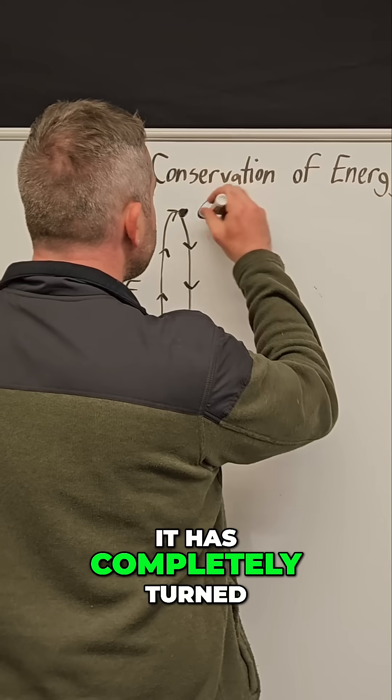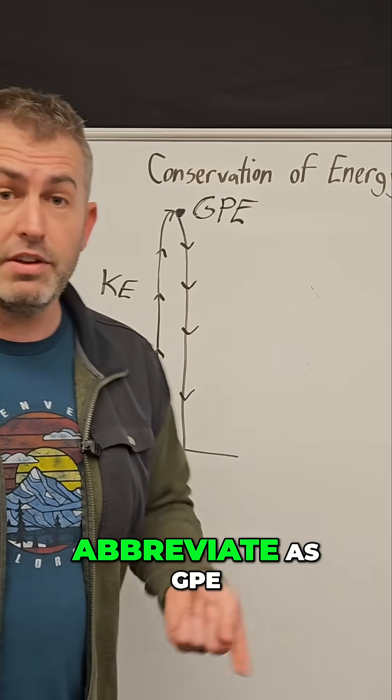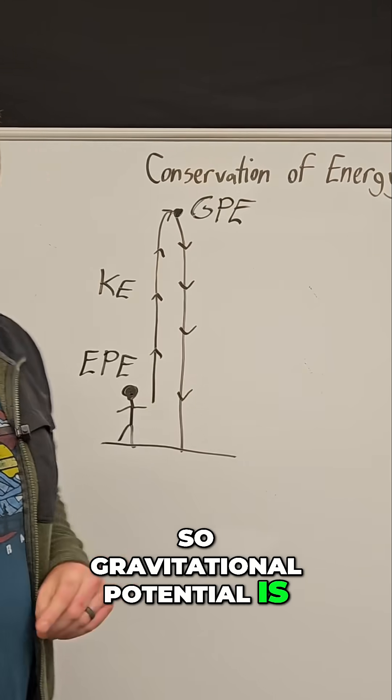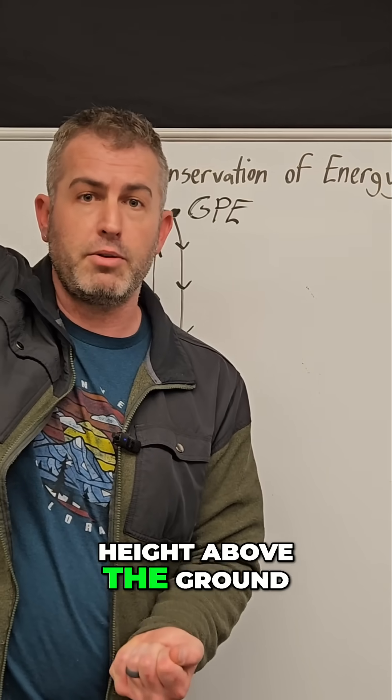It has completely turned into what's called gravitational potential energy, which I'm going to abbreviate as GPE. Gravitational potential is the type of energy that objects have when they are lifted some height above the ground.